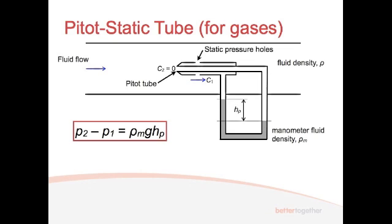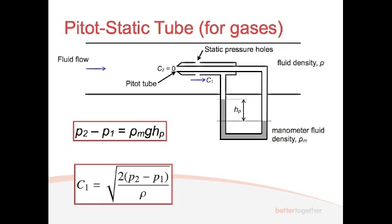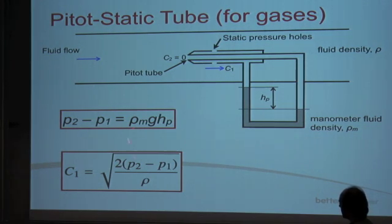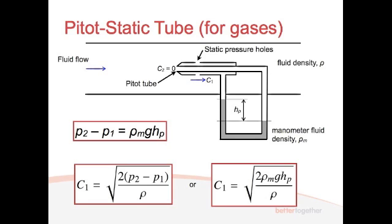We end up with the same pressure difference equation — since we're dealing with a gas, we have no fluid density term, just the manometer density. The value for C1 calculated earlier still applies. Notice we've got P2 minus P1; you can substitute that term in, and you have the same equation. The airspeed, or fluid speed C1, is the square root of 2 times the pressure difference divided by ρ, and you can replace the pressure difference with ρ_m·g·HP.